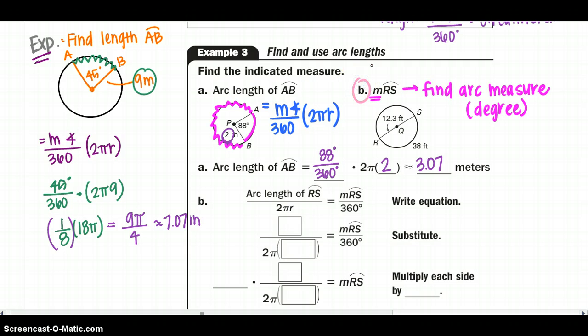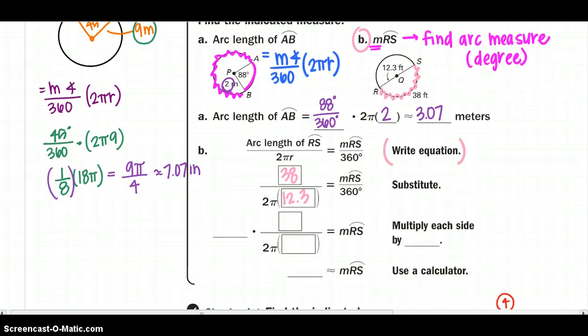Going and moving over to B, I want to find the measure, so I'm going to find it in degrees. So I'm going to use my other equation that is written up there. So my arc length would be 38 over 2 pi, my radius is 12.3, equals the measure over 360. I would then cross multiply 360 times 38 over 12.3 times 2 pi to get my measure by itself, and I would get approximately 177 degrees.